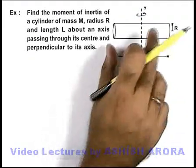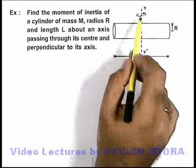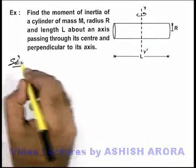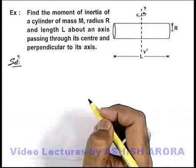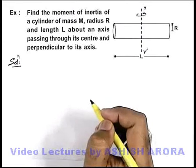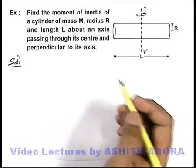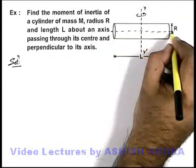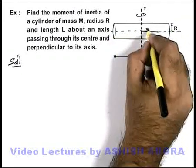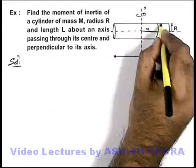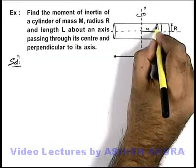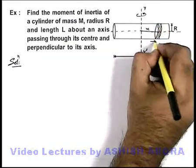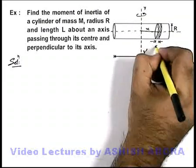In this situation, the cylinder is rotating about the axis y-y'. For calculation of moment of inertia of a rigid body, we need to take an element. Along the axis of this cylinder, we consider an elemental disc at a distance x from the axis of rotation, and the width of this disc element is dx.